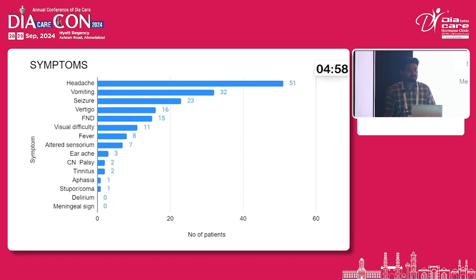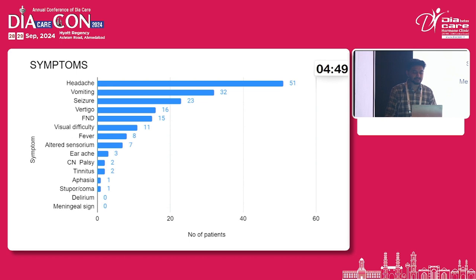The most common symptom in cerebral venous sinus thrombosis was headache, with 51 percent having headache as the most common complaint, followed by patients having vomiting, seizure, and vertigo. Focal neurological deficit was seen in 15 cases.